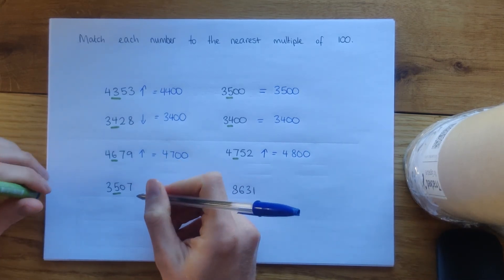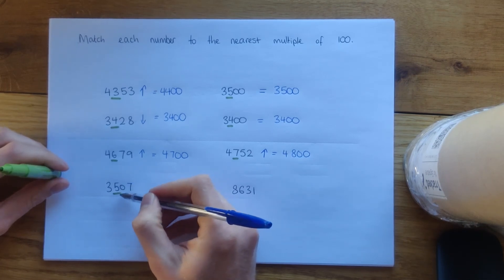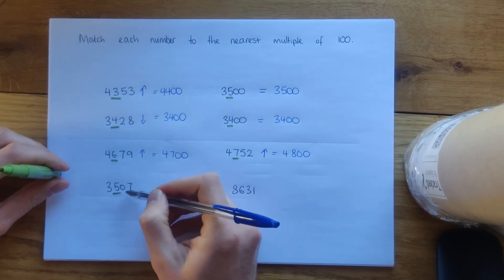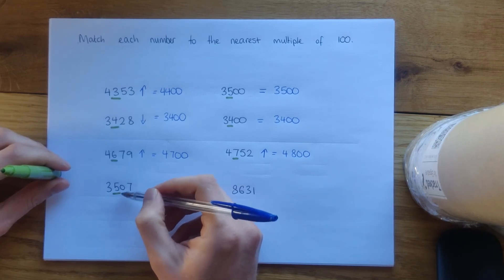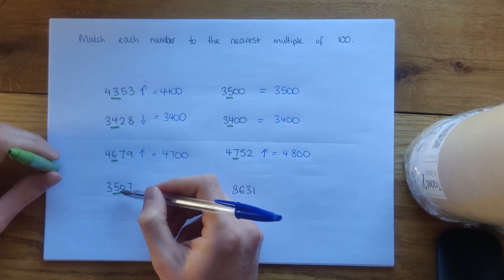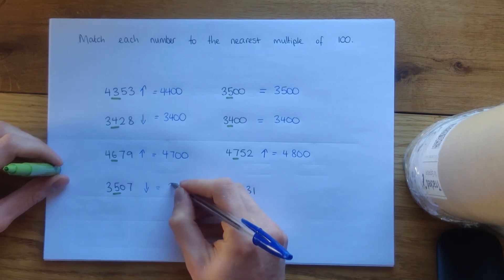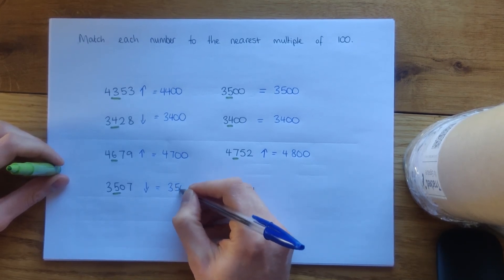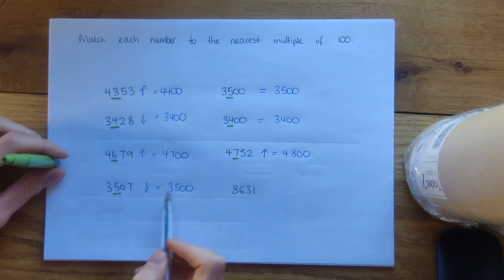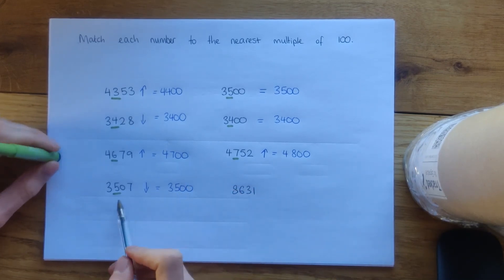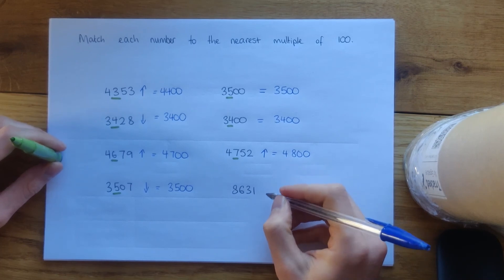This question: we've got 3,507. We're thinking about our hundreds column — do we round up to 3,600 or leave it at 3,500? We've got zero in our tens column, so it's going to be rounded down. 3,550 would be halfway; we're definitely less than that, so we leave it at 3,500. It's only 7 away from 3,500 but 93 away from 3,600.